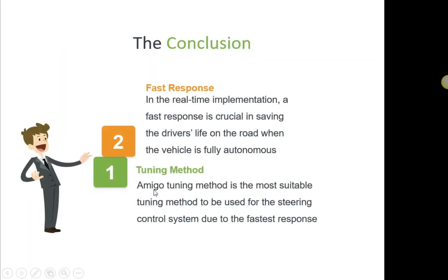So, as a conclusion, Amigo tuning method is the most suitable tuning method to be used for the steering control system due to the fastest response. But both methods can be used. But in real time implementation, a fast response is very crucial in saving the driver's life on the road when the vehicle is fully autonomous. That's why in this case, Amigo tuning method is preferred.